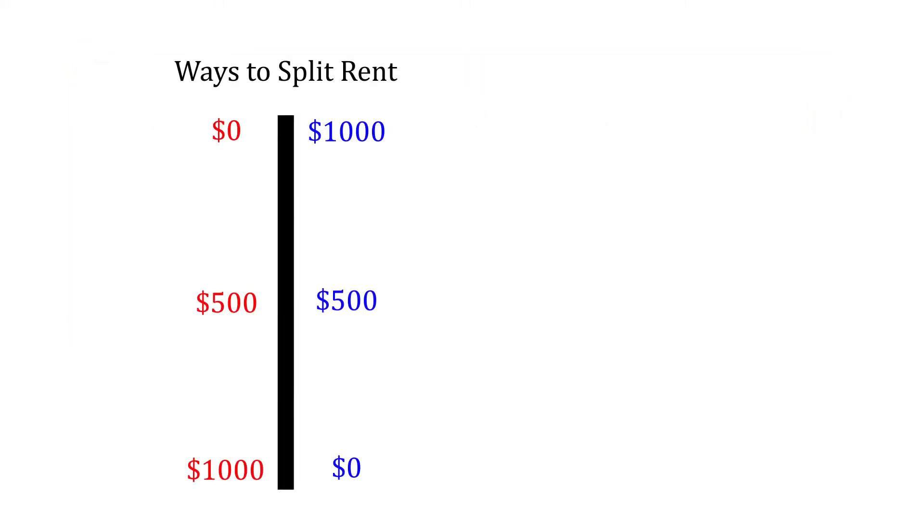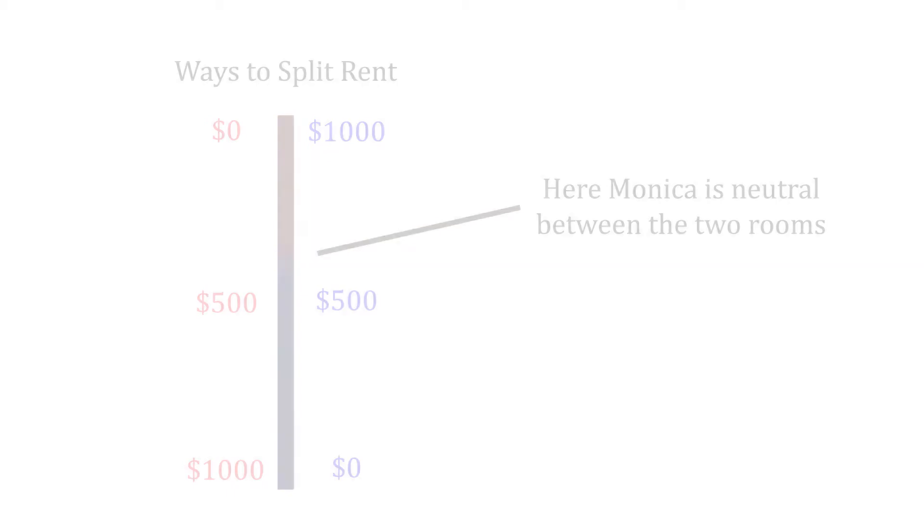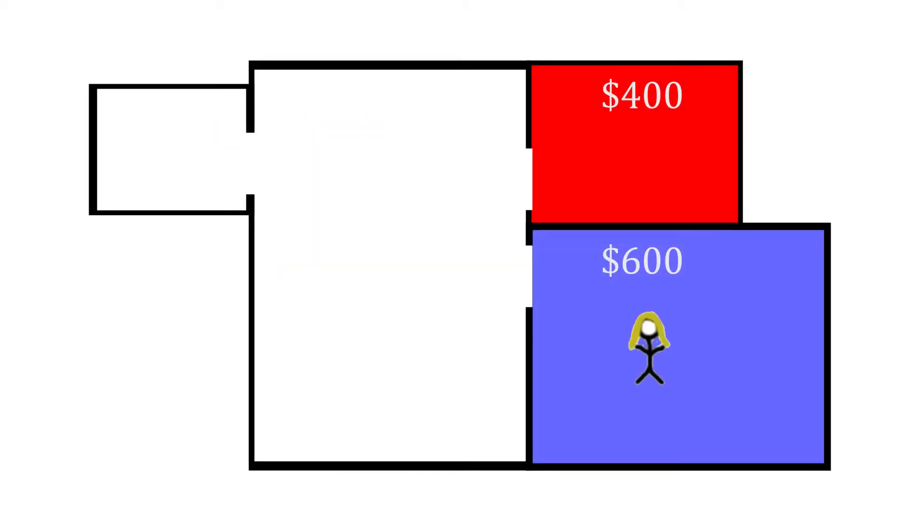The solution is the old 'I cut, you choose.' Monica splits the rent so that she's neutral between the two rooms, either $400 for the small room or $600 for the bigger room. She doesn't care. Then Rachel selects a room and both of them are happy.